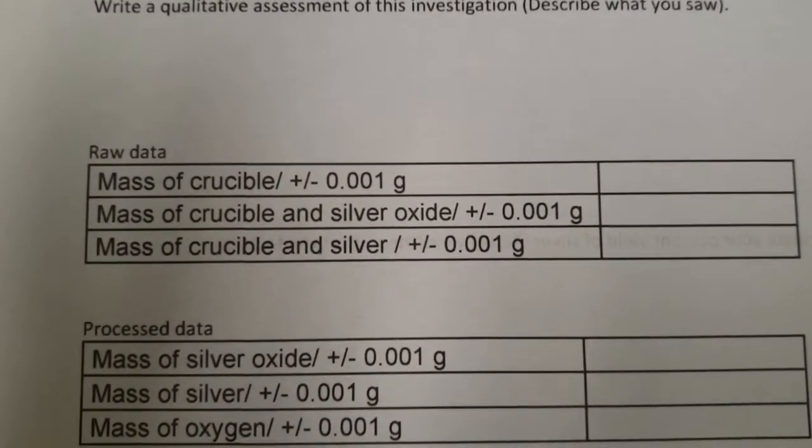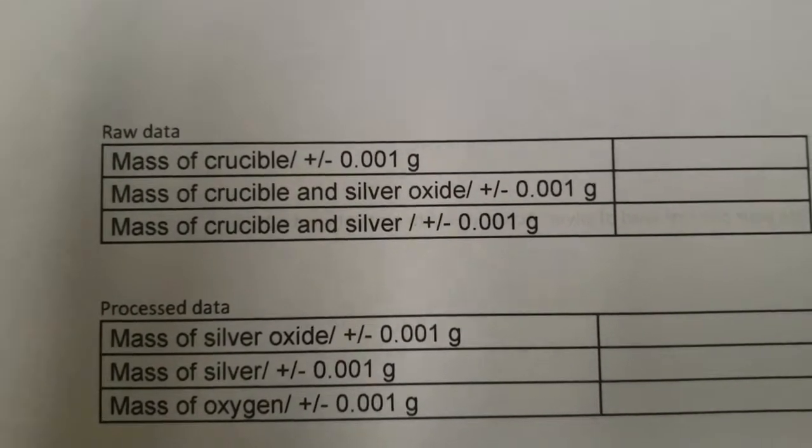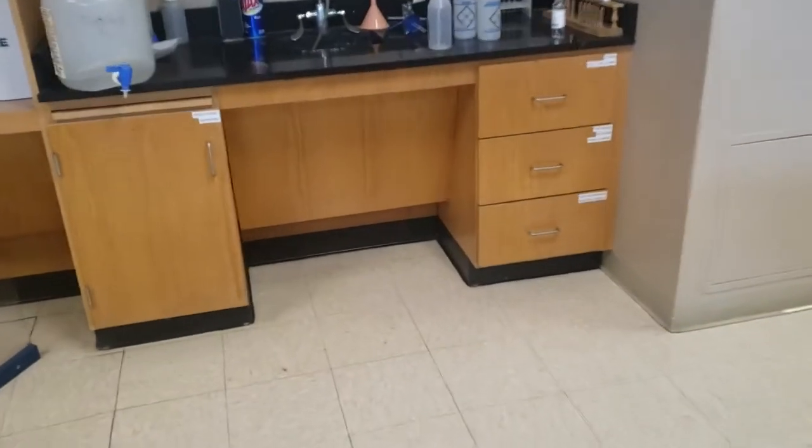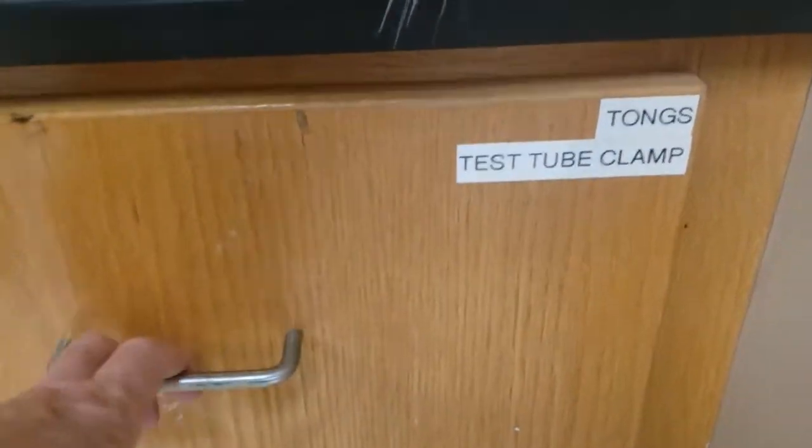Of course, something to light the burner with. We're going to collect three pieces of raw data today: mass of the crucible, the crucible with silver oxide, and the crucible with the silver. In our lab, this is where things are located.